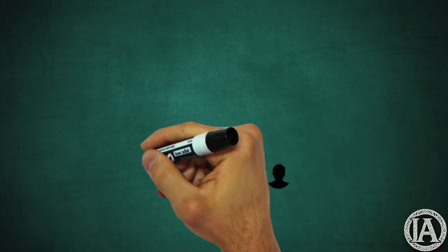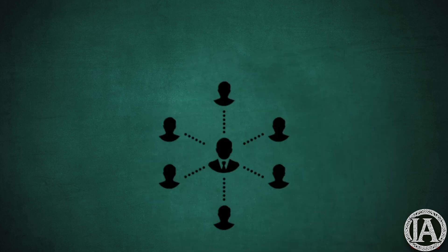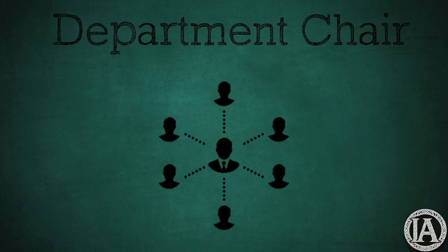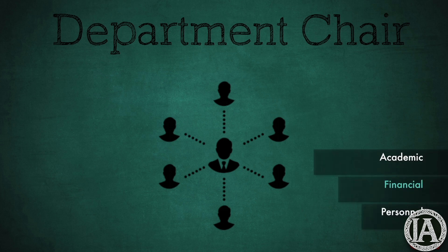At most institutions, the basic unit of academic organization is the department chair. This individual is responsible for representing academic, financial, and personnel interests of the department as well as initiating searches for new faculty members.